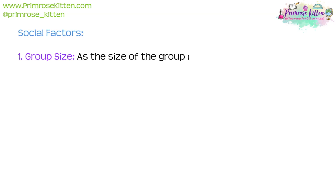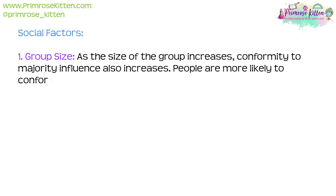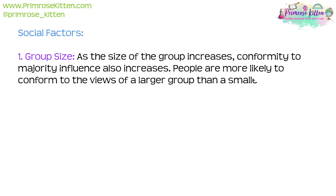Social factors. Number one is group size. As the size of the group increases, conformity to majority influence also increases. People are more likely to conform to the views of a larger group than that of a smaller one.